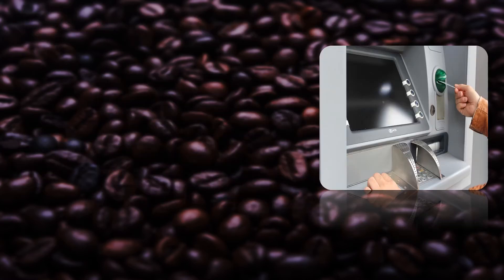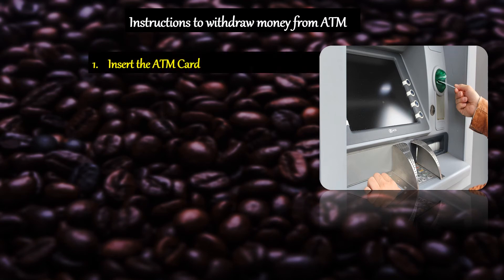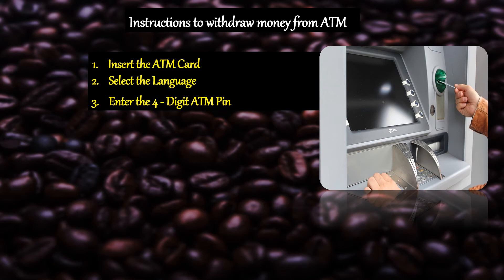Let's see how to withdraw money from an ATM. First of all, I'm going to give the title: 'Instructions to withdraw money from ATM.' The first step is to insert the ATM card. Next, select the language. After that, enter the four-digit ATM pin.